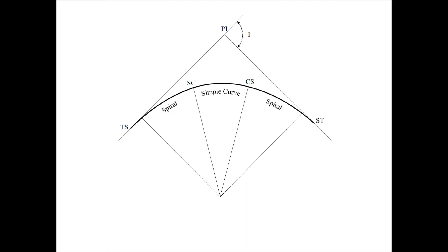A spiral curve consists of a simple curve bounded by spiral transitions on each end. The spiral transition provides a smooth transition from the tangent segment that allows for the equilibrium of vehicles to be maintained throughout the curve in a designed manner. On simple curves, drivers tend to drive a spiral transition even if one is not designed into the curve. Geometrically, the spiral has a constantly changing radius and the transition connects the tangent section, which has an infinite radius, to the simple curve, which has a fixed radius.